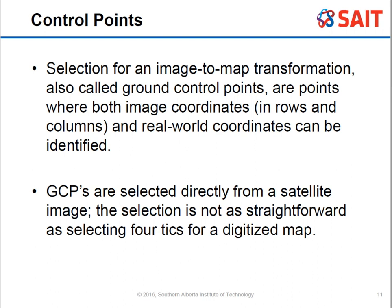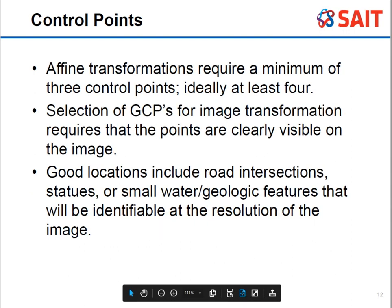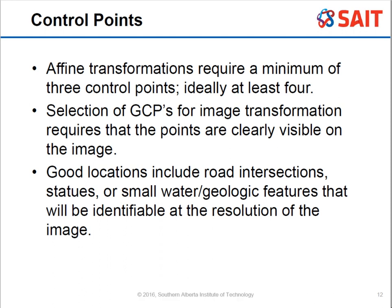GCPs — ground control points — are selected directly in the image, and this is not as straightforward as selecting ticks for a digitized map. An affine transformation requires a minimum of three, ideally four, but that's still really not enough for image transformation. Points must be clearly visible on the image. For example, the side of a building can be problematic because it may appear shifted or leaning from the center of the image, making it hard to pinpoint precisely.